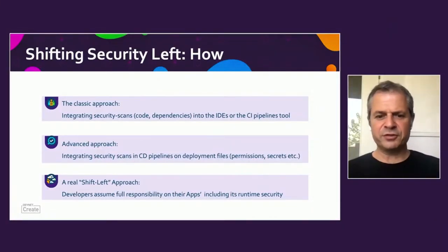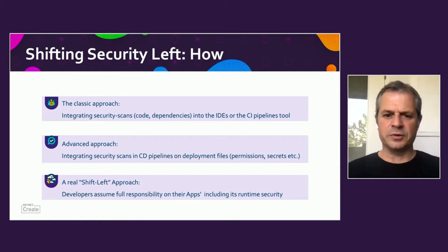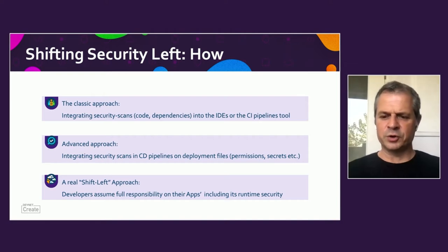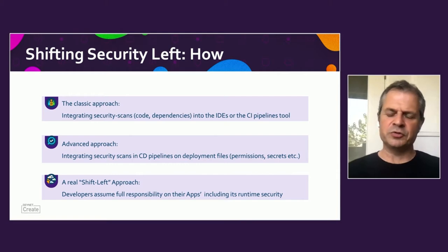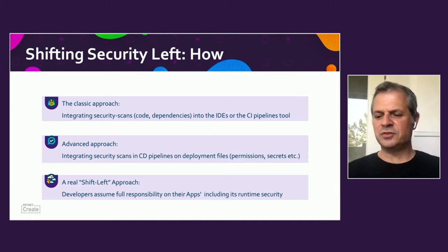When we say shift left, we divide it into three phases. The first is the classical approach, which is what most development teams do today: integrating security scans — code scanning or dependency scanning — into IDEs or continuous integration pipelines, whether using Jenkins, GitLab, or other modern CI tools.